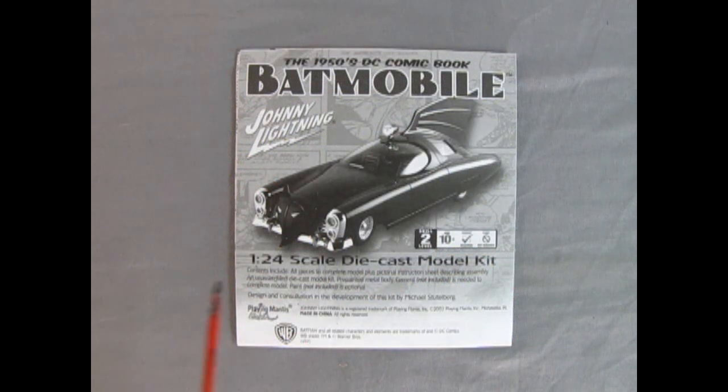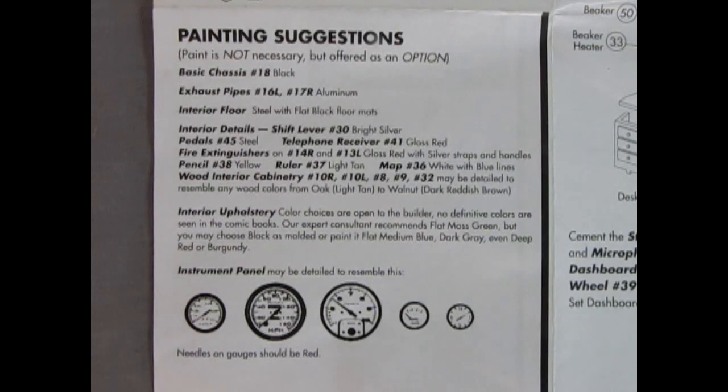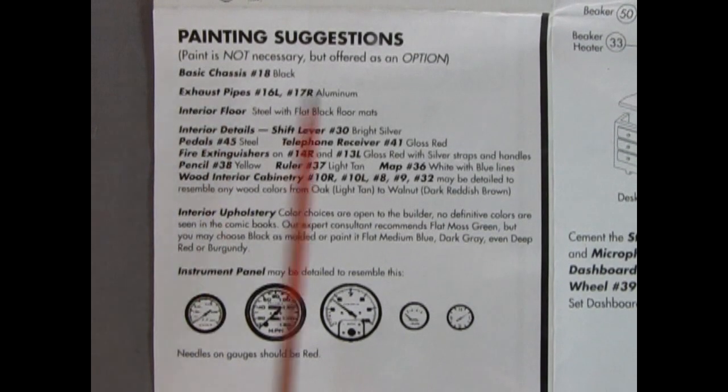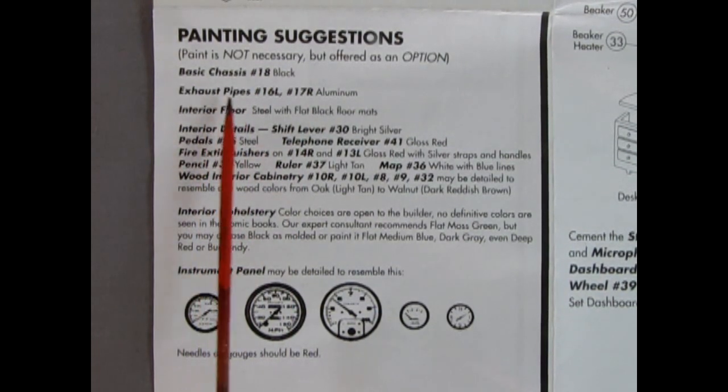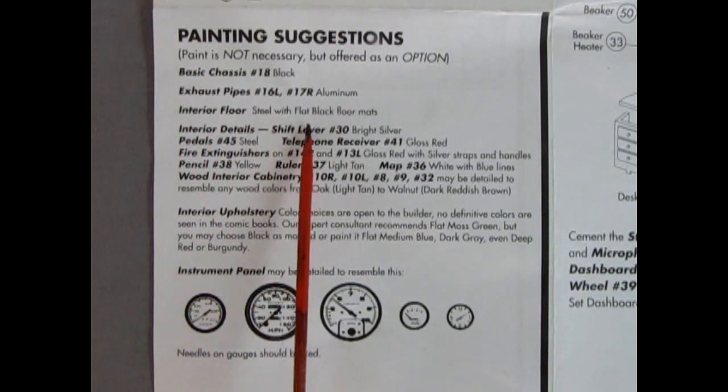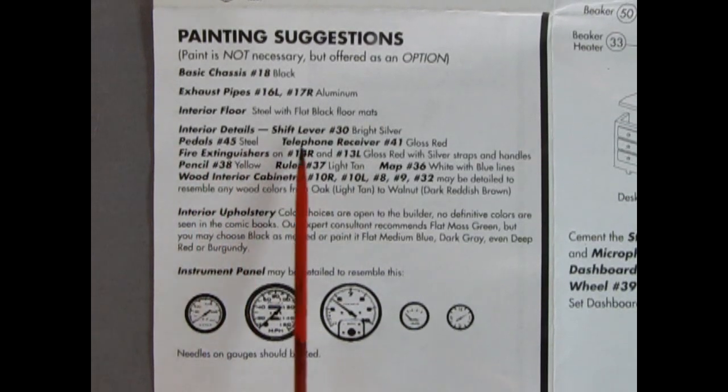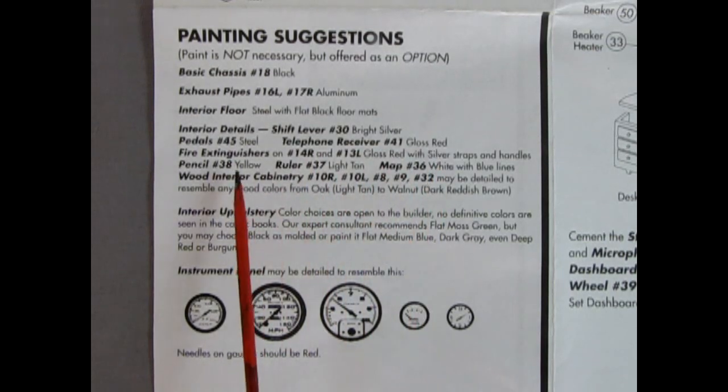Typically I begin our review by taking a look at the instructions. Now this helps everybody to understand how the model will go together, as well as for those people that have got this model and lost their instructions. I'm here to provide that service. So right off the bat, no pun intended, are the painting suggestions. It says paint is not necessary but offered as an option. The basic chassis is black, the exhaust pipes are aluminum, interior floor steel with flat black floor mats, interior details, the shift lever is bright silver, pedals are steel.